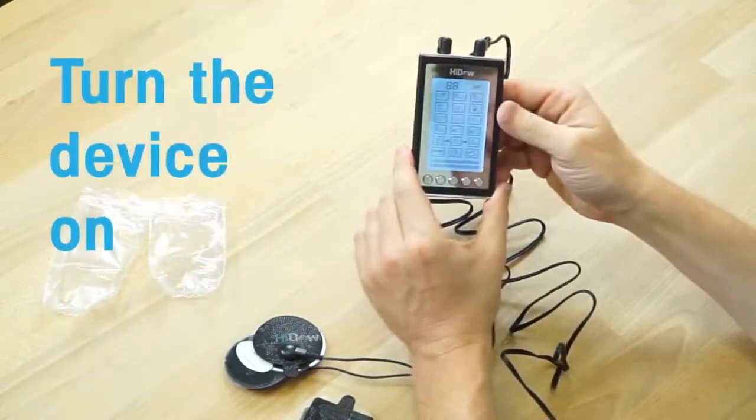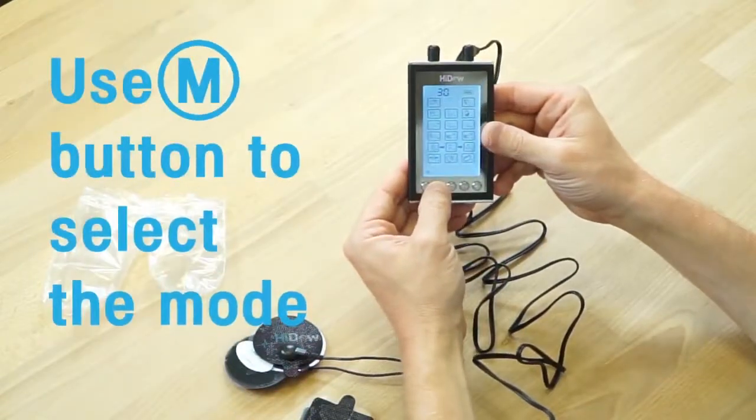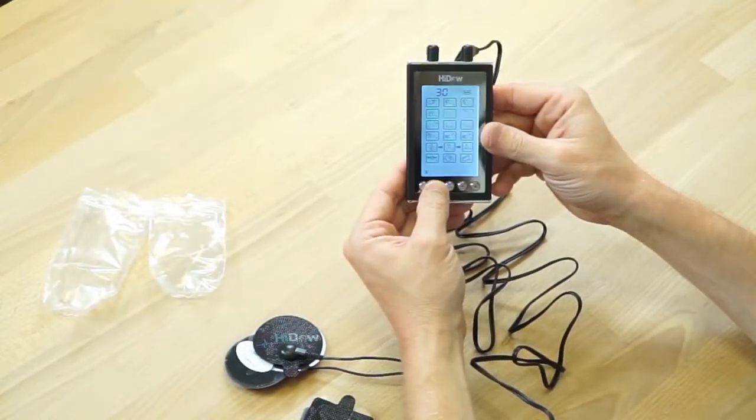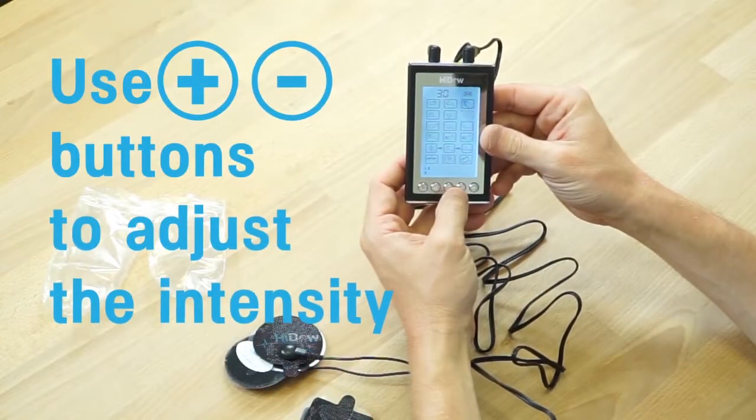Turn the device on, use the M button to select your desired mode, plus and minus to increase and decrease intensity.